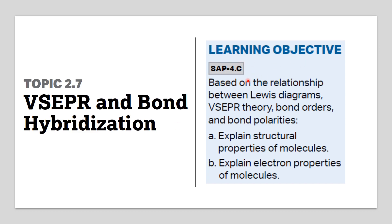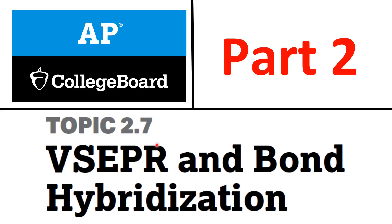The learning objective of this topic is based on the relationship between Lewis diagrams, VSEPR theory, bond orders, and bond polarities — to explain structural properties of molecules and electron properties of molecules. Hello everyone, this is topic 2.7: VSEPR and bond hybridization, taken from AP Chemistry College Board. This is part 2 of the topic.